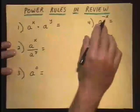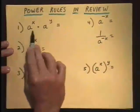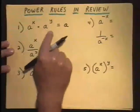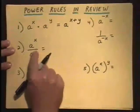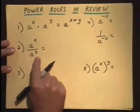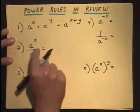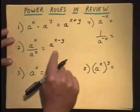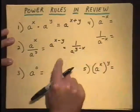Power rules in review. Power rule number one: whenever we multiply same bases, we add the powers. So a to the x times a to the y equals a to the x plus y. Power rule number two: when you divide same bases, a to the x divided by a to the y, the rule is subtract the powers. We can subtract up and say a to the x minus y, or subtract down and say one over a to the y minus x.